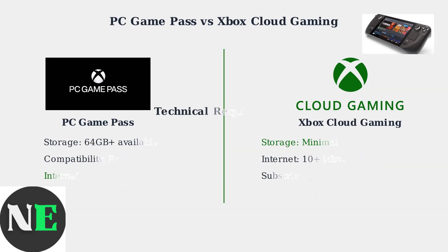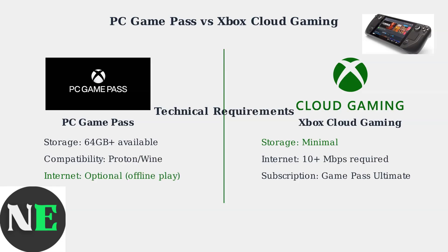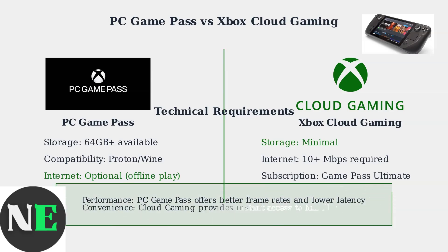Here's a summary of the technical requirements. PC Game Pass needs significant storage space and compatibility layers, but can work offline. Cloud Gaming requires minimal storage and a Game Pass Ultimate subscription, but depends entirely on your internet connection. PC Game Pass delivers better performance with higher frame rates and lower input latency, while Cloud Gaming offers the convenience of instant access to the entire Game Pass library without storage concerns.